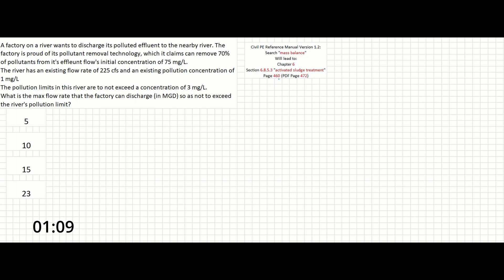The version of the mass balance equation that we want to use can instead be written as follows: q1·c1 + q2·c2 = q3·c3. And in this case, q3 is going to be a combination of q1 + q2.